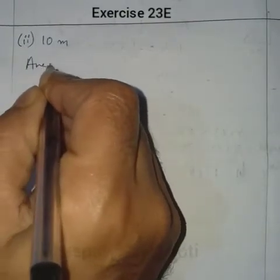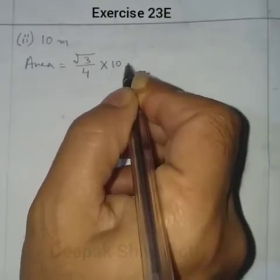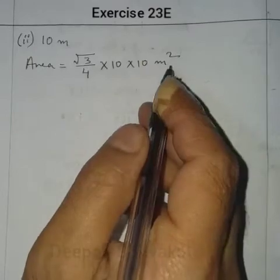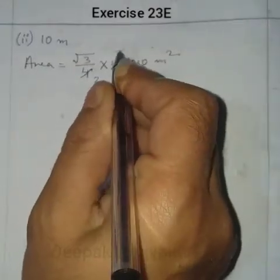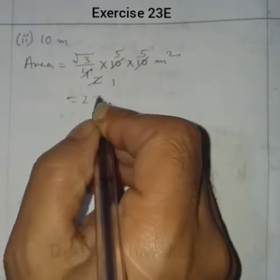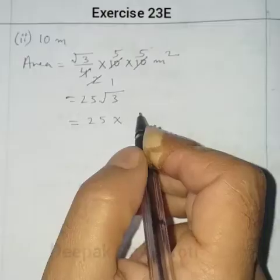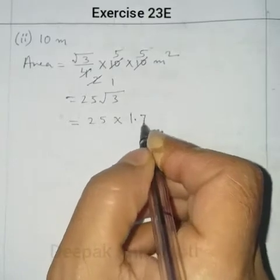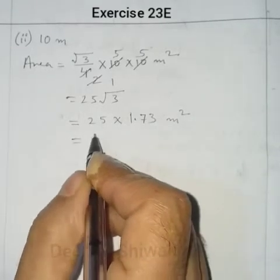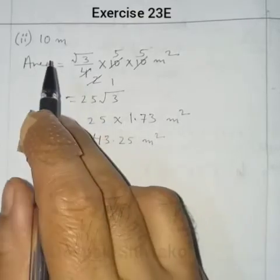For an equilateral triangle with side 10 m: Area = (√3 / 4) × 10² = (√3 / 4) × 100 = 25√3. The value of √3 is 1.73, so Area = 25 × 1.73 = 43.25 m².